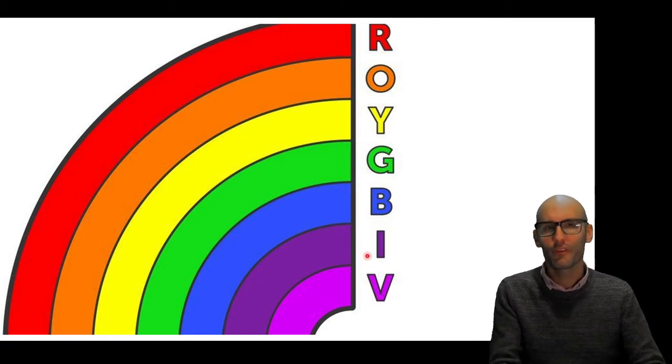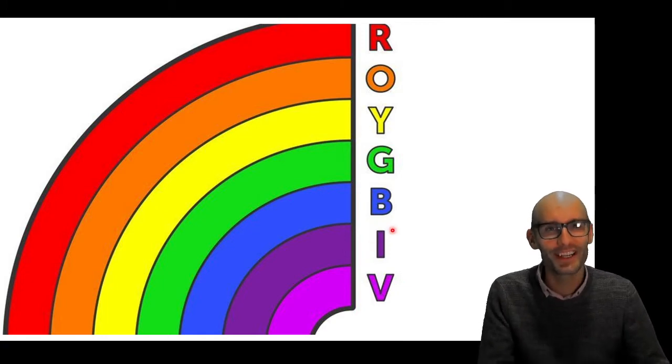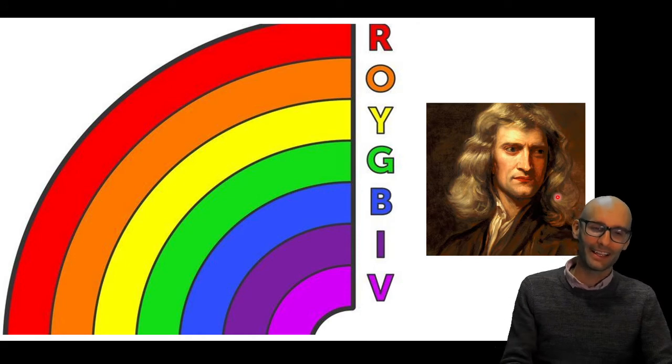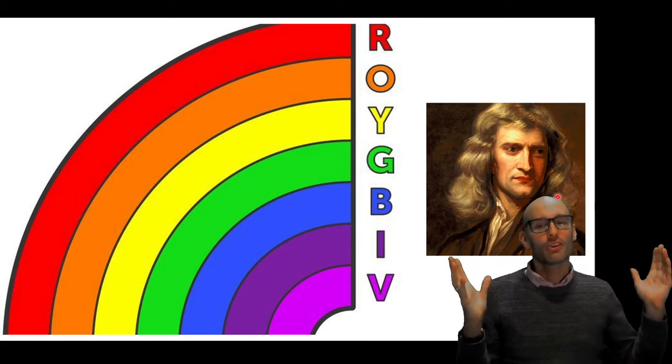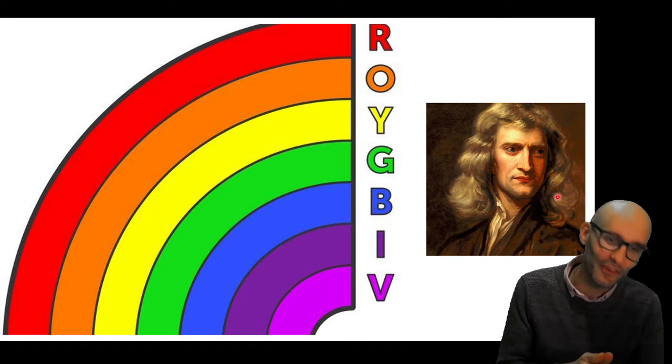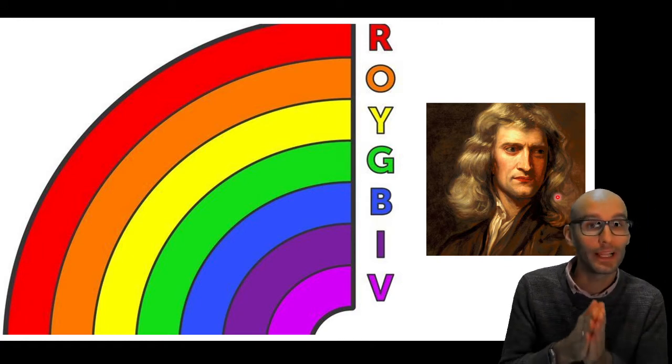But for some reason, we've got two purples. We've got indigo and violet. And why that is, is because Isaac Newton came up with the whole Roy G. Biv thing, and seven, he felt, was a holy number.